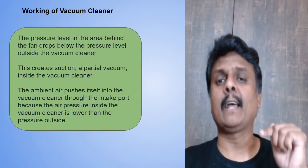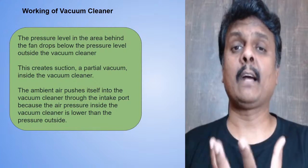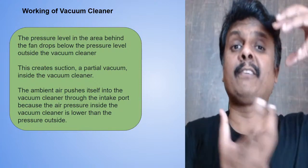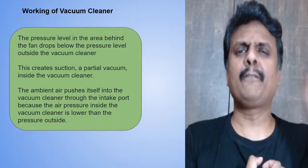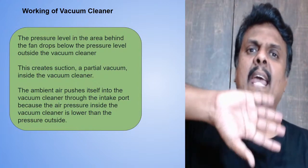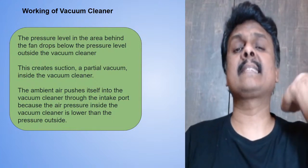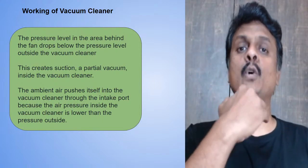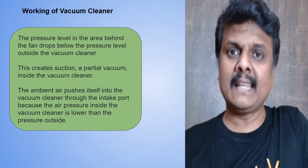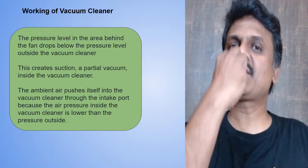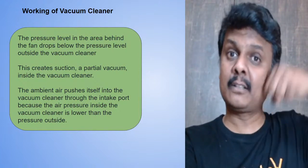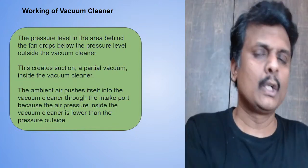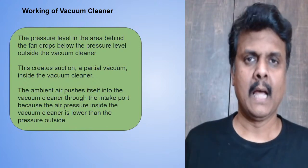When you switch on a vacuum cleaner, there is a motor which starts. Power is supplied and the motor forces the fan attached to it to rotate very fast. When that rotates very fast, air is circulated and sent out through the exhaust port. When air goes out — just like when you blow out, you suck air in — one side it is blowing forcefully, and the other side it is getting sucked forcefully. That is where we attach the intake port to suck all the dust particles.